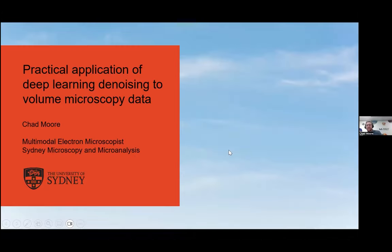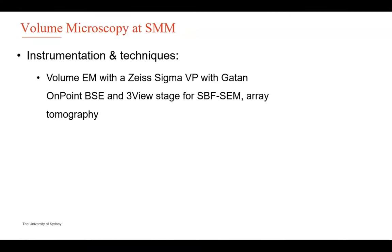Thanks Ben, that was super. If you're anything like me, after hearing how these strategies work you'd be super interested in trying them on your own data. I'd like to share what it's been like to implement these things at Sydney Microscopy and Microanalysis on data we're generating here. As a multimodal electron microscopist in the biological EM team, I generally collect volume EM — both SBF SEM and array tomography data — using a Zeiss Sigma with a GATAN OnPoint backscatter detector and GATAN 3View stage.